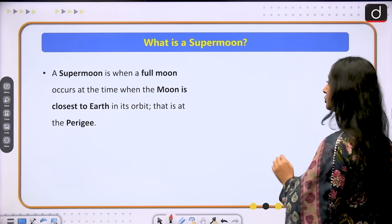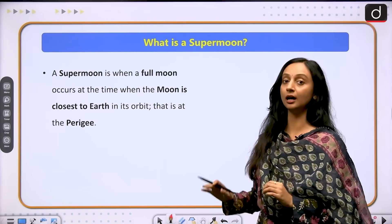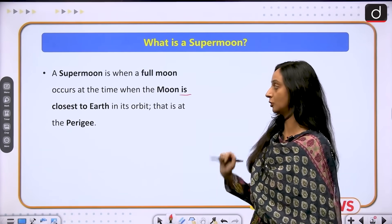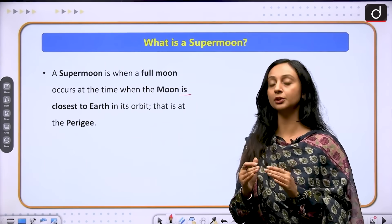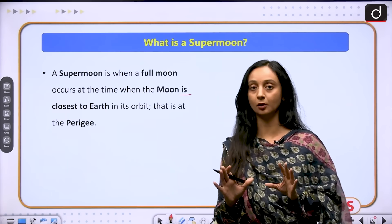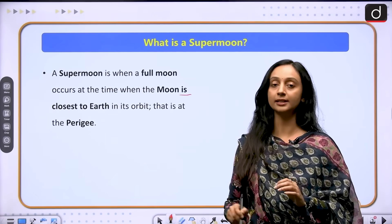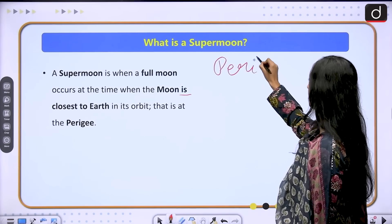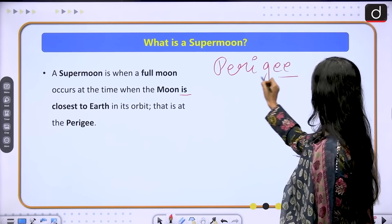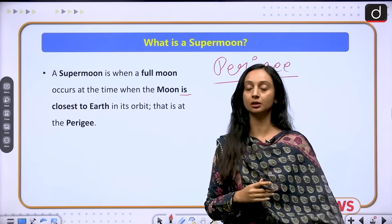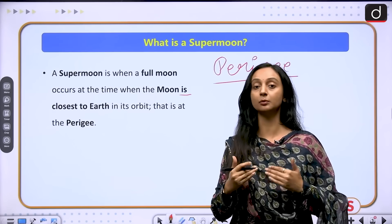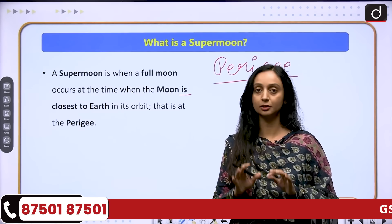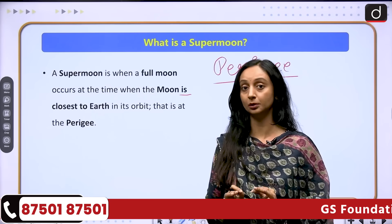A supermoon is a full moon that occurs at a time when the moon is closest to the earth in its orbit — that is, at perigee. So a supermoon is basically an astronomical phenomenon where the moon is at perigee, which is the point closest to the earth. At this time we witness a moon that is slightly bigger in size and also brighter in its appearance.